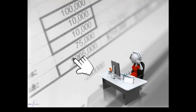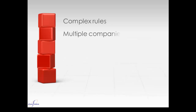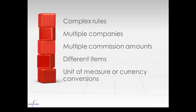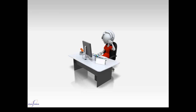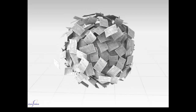The current process requires the administrator to manually review and adjust quarterly sales figures at the individual sales order level. This gets challenging when there are complex rules including multiple companies and multiple commission amounts due for each different item. It gets even more complicated when there are unit of measure or currency conversions, and when more than one system is used, the manual processes can become tedious and overwhelming.